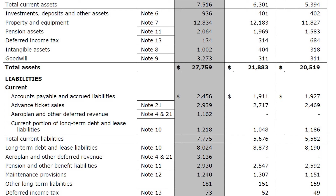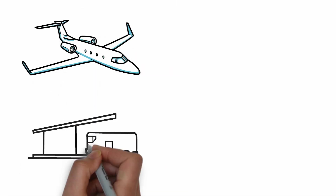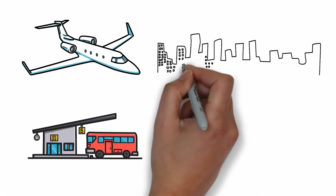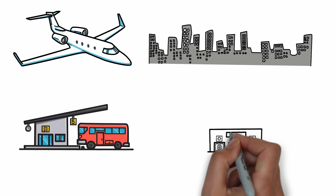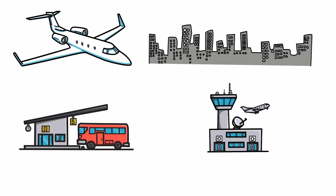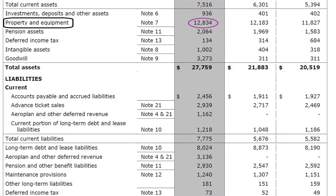Property and equipment — which includes aircraft, flight equipment, land, buildings, and similar items — is one of Air Canada's biggest assets, worth 12.8 billion dollars.